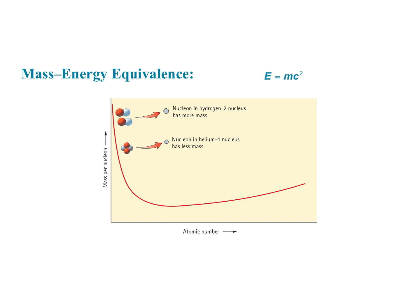The opposite process — fusion — is shown on the same graph. Take two deuterium nuclei (hydrogen with a neutron: a proton plus neutron each) and look at their mass per nucleon — it's higher up on the curve. When they fuse into helium, you have the same number of protons and neutrons, but the mass per nucleon in the helium nucleus is lower on the curve. So the mass of a helium nucleus is less than the combined mass of the two hydrogen nuclei that made it. That missing mass is released as energy, which is why both fission and fusion reactions generate energy.